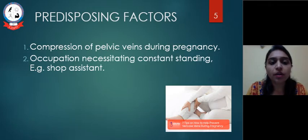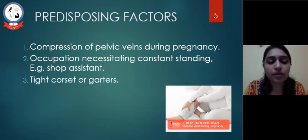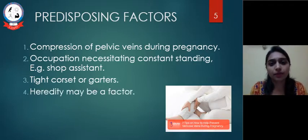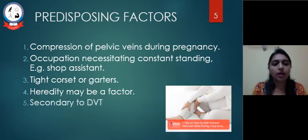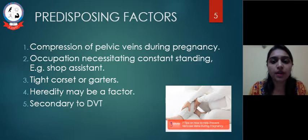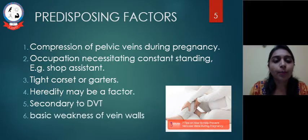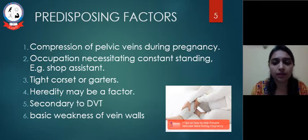Second, occupations necessitating constant standing, like a shop assistant or traffic constable. Third, tight corsets or garters. Fourth, hereditary factors. Fifth, secondary to deep vein thrombosis — if a person has DVT there are chances the valve becomes incompetent and varicosity may develop. Sixth, basic weakness of the vein valve — if veins are already weakened, chances of getting varicose veins increase.